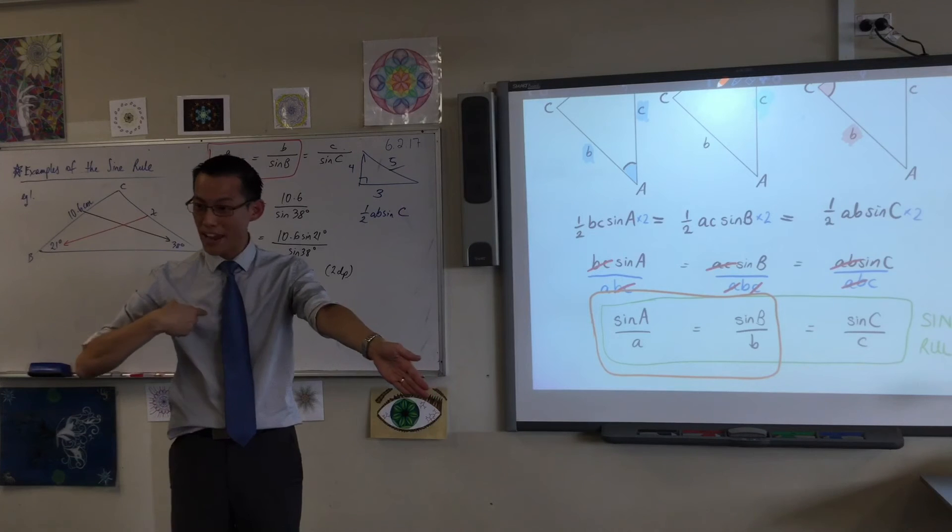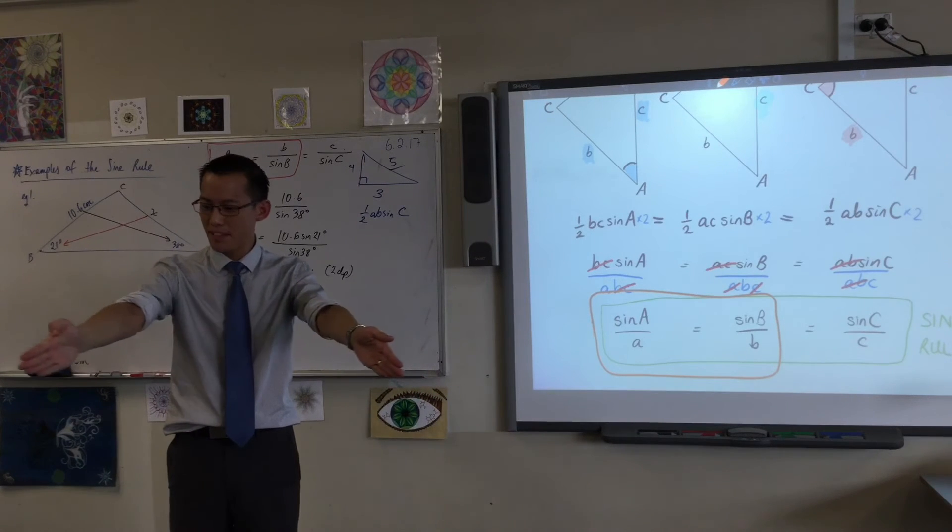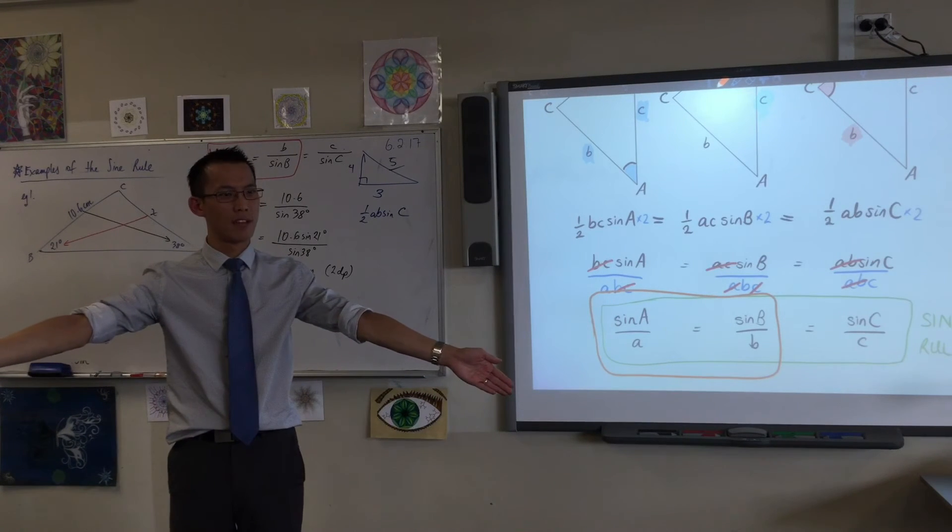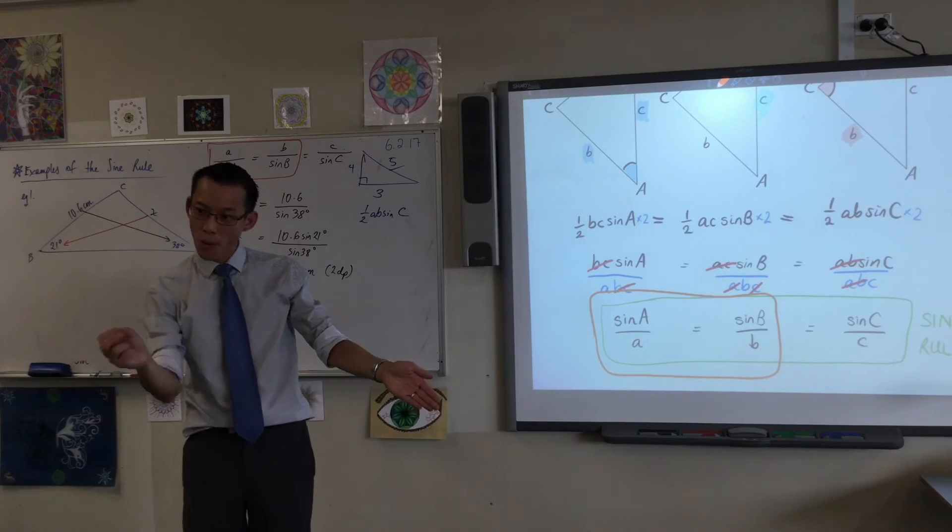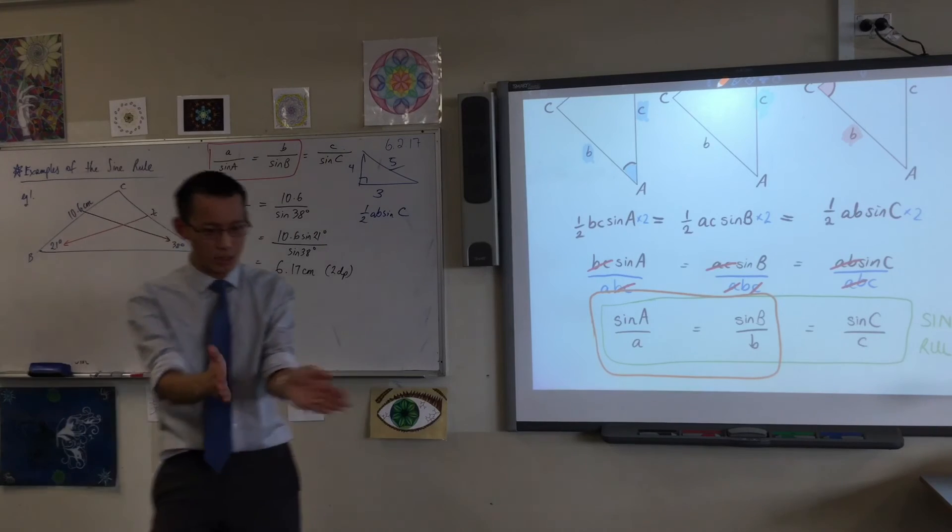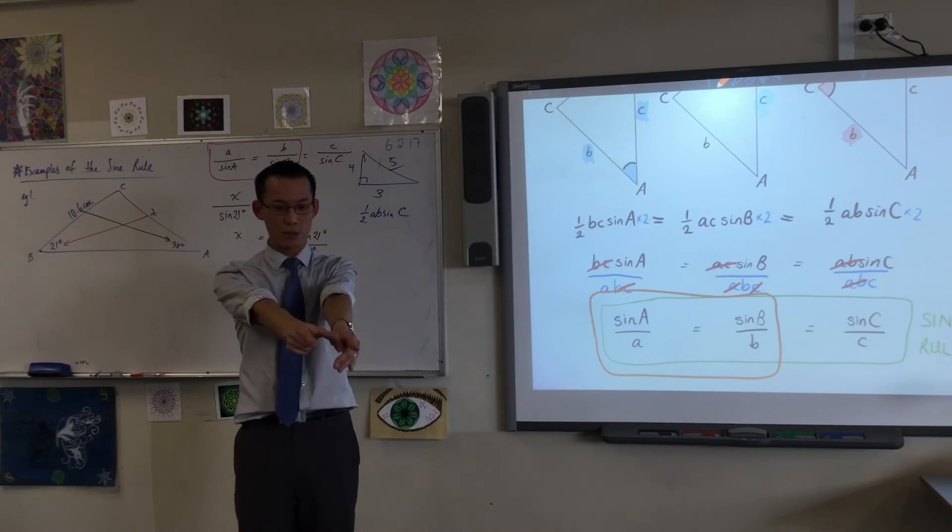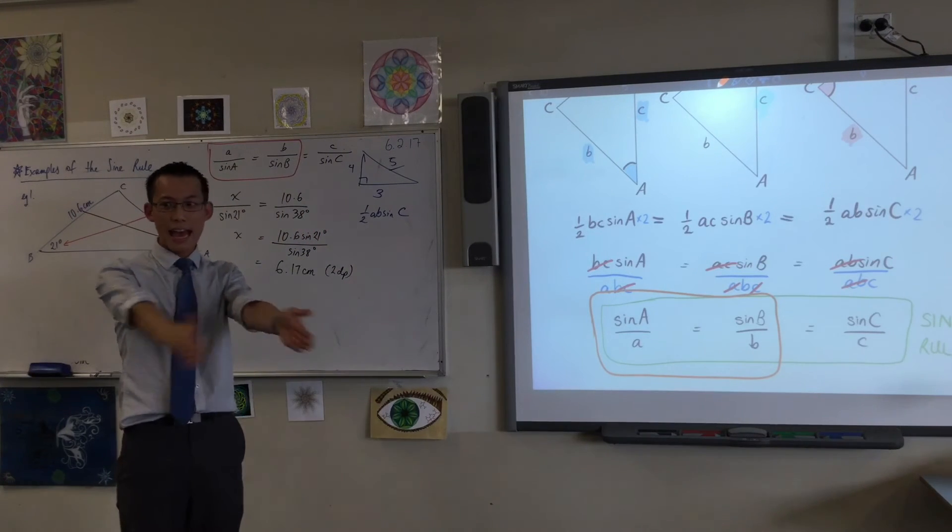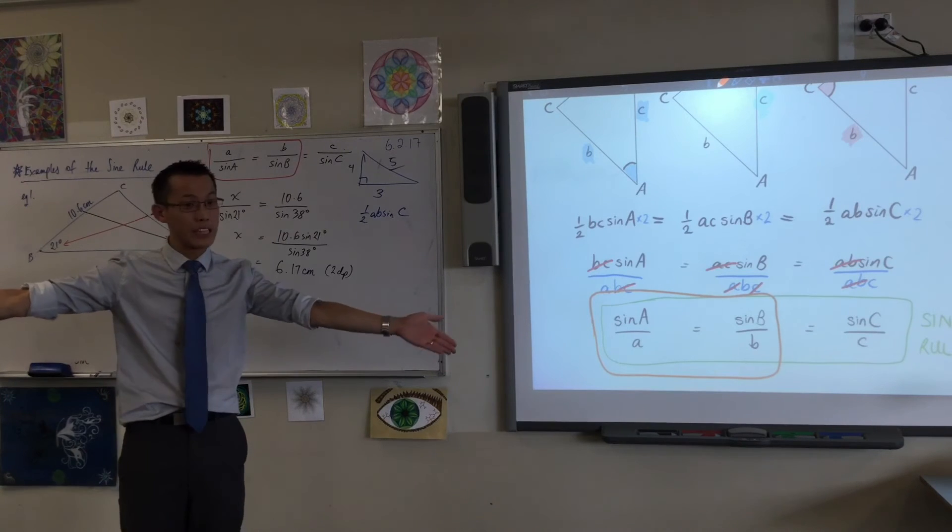Now think about this: as the angle where you are gets bigger, what happens to the length of the side? They both change, and importantly, as the angle gets bigger, the side also gets bigger. Does that make sense? Look, here's a little angle and a little side in between my hands, and here's a big angle and a really big side. Do you agree?